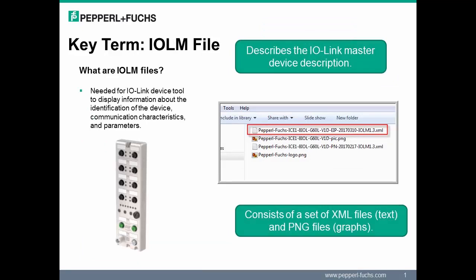Another term we will need to know is the IOLM file. An IOLM file is primarily needed when using the IO-Link device tool. The value of this file becomes more clear as we become more familiar with the capabilities of the IO-Link device tool. An IOLM file enables the tool to recognize our IO-Link master, providing an identity for the Pepperl+Fuchs IO-Link master in the IO-Link device tool.